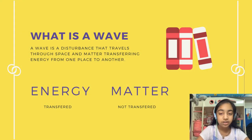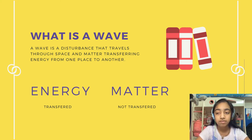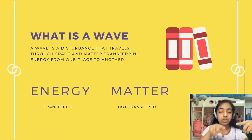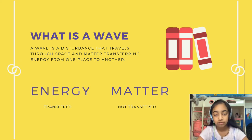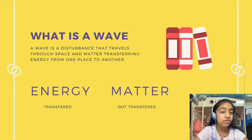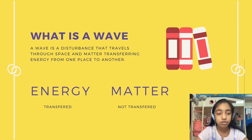So first of all, what is a wave? A wave is a disturbance that travels through space and matter, transferring energy from one place to another. What happens is that a wave pushes the matter around it to travel. For example, the wave will push air particles and vibrate them to go through. But in some cases, some waves do not need matter to travel — they can travel straight through vacuum, which is empty space. It is very important to remember that energy is transferred and matter is not transferred.